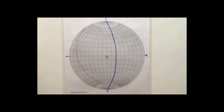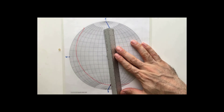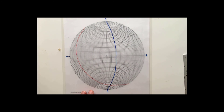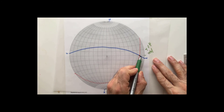Here we have the intersection of the fault and the limestone, which is the answer for part one — the orientation of the orshoot. To write the trend and plunge, place a ruler from the center to the intersection and mark where it hits the primitive circle: the trend is 175°. Then place that point along the east-west line and count the plunge: it's 14°. So the orshoot trends 175° and plunges 14°.